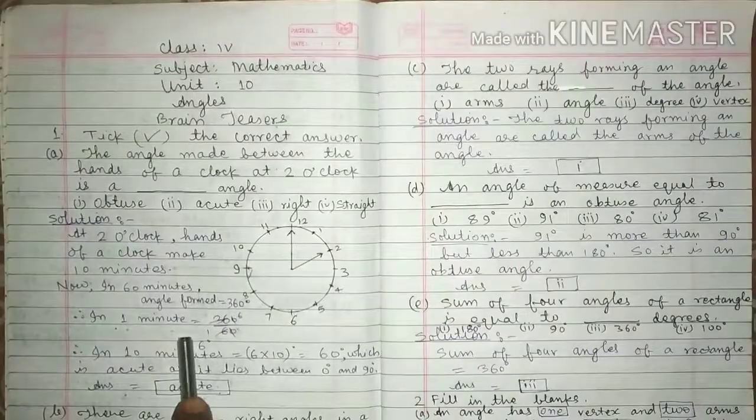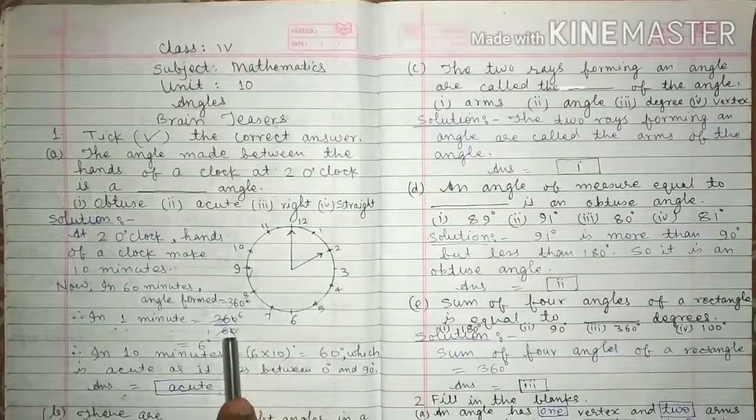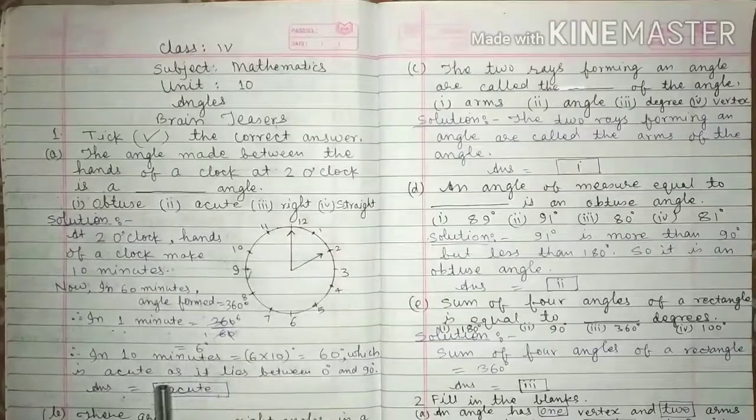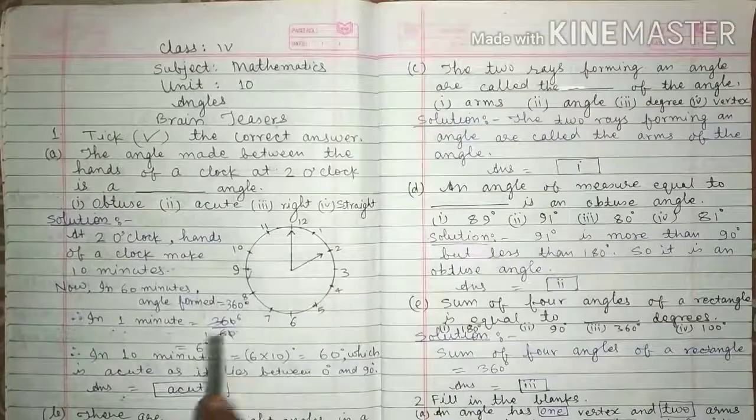in 1 minute, 360 degree by 60. 0, 0 cancel, 6, 1 is 6, 6 is 36. This equals to 6 degree.